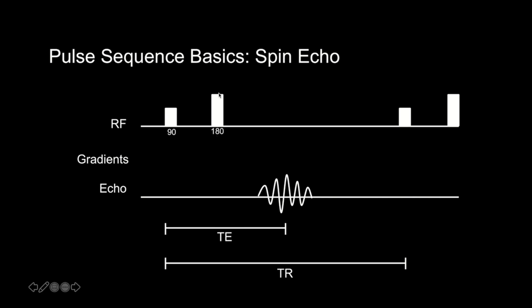The purpose of this 180-degree pulse is to bring the nuclei that precessed out of phase due to magnetic field inhomogeneities back into phase. We then have our spin echo, and the signal we get here is not as sensitive to signal loss from magnetic field inhomogeneities as the gradient echo shown earlier. Again, we have the TE and TR, and these are the parameters that determine the tissue contrast.